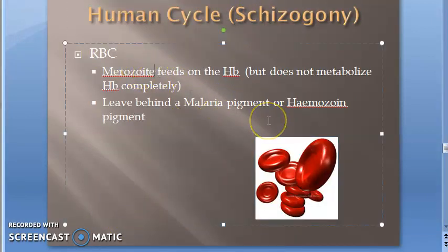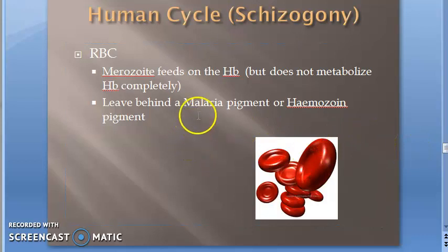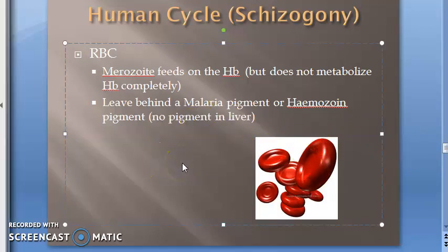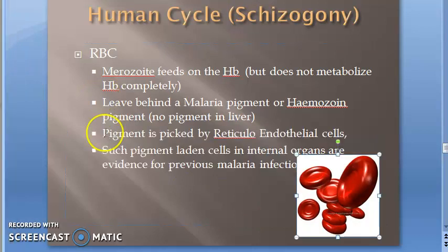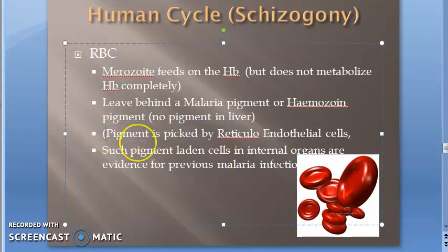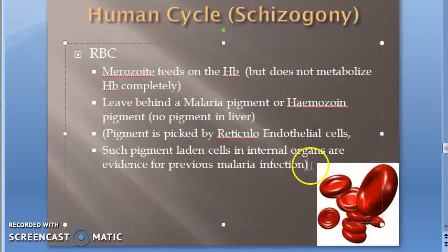The merozoites feed on hemoglobin but do not metabolize it completely, so they leave behind a malaria pigment or hemozoin pigment. Note that in the liver stage, no pigment is left. This hemozoin is taken up by reticuloendothelial cells, and pigment-laden cells in internal organs provide histological evidence of a previous malarial infection.